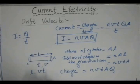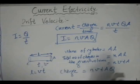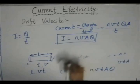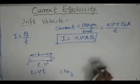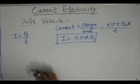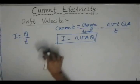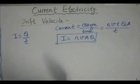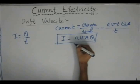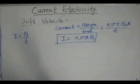If we observe this equation very carefully, what we can observe is that if we want to increase the amount of current flowing through the cylinder, one thing we can do is by increasing the number of free electrons on the surface of the conductor.